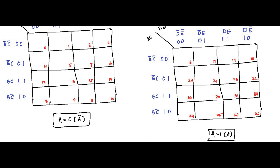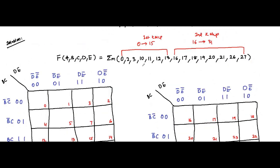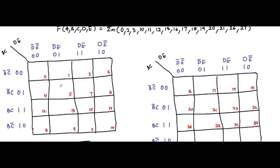Now we have to plot the minterm values in these K-maps. In the 0 to 15 range, the values are 0, 2, 3, 10, 11, 12, 13 — so we plot cells 0, 2, 3, 10, 11, 12, 13 in the first K-map.